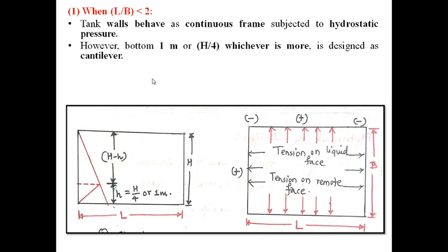However, the bottom 1 meter or H/4, whichever is more, is designed as a cantilever. The total height is H, where H' equals H/4 or 1 meter whichever is greater — that portion is designed as cantilever. The remaining H minus H' is designed as a continuous frame subjected to hydrostatic pressure. Continuous frame means it is a rigid frame formed by 2 long walls and 2 short walls, because the connection between long wall and short wall is rigid, behaving as a fixed support.